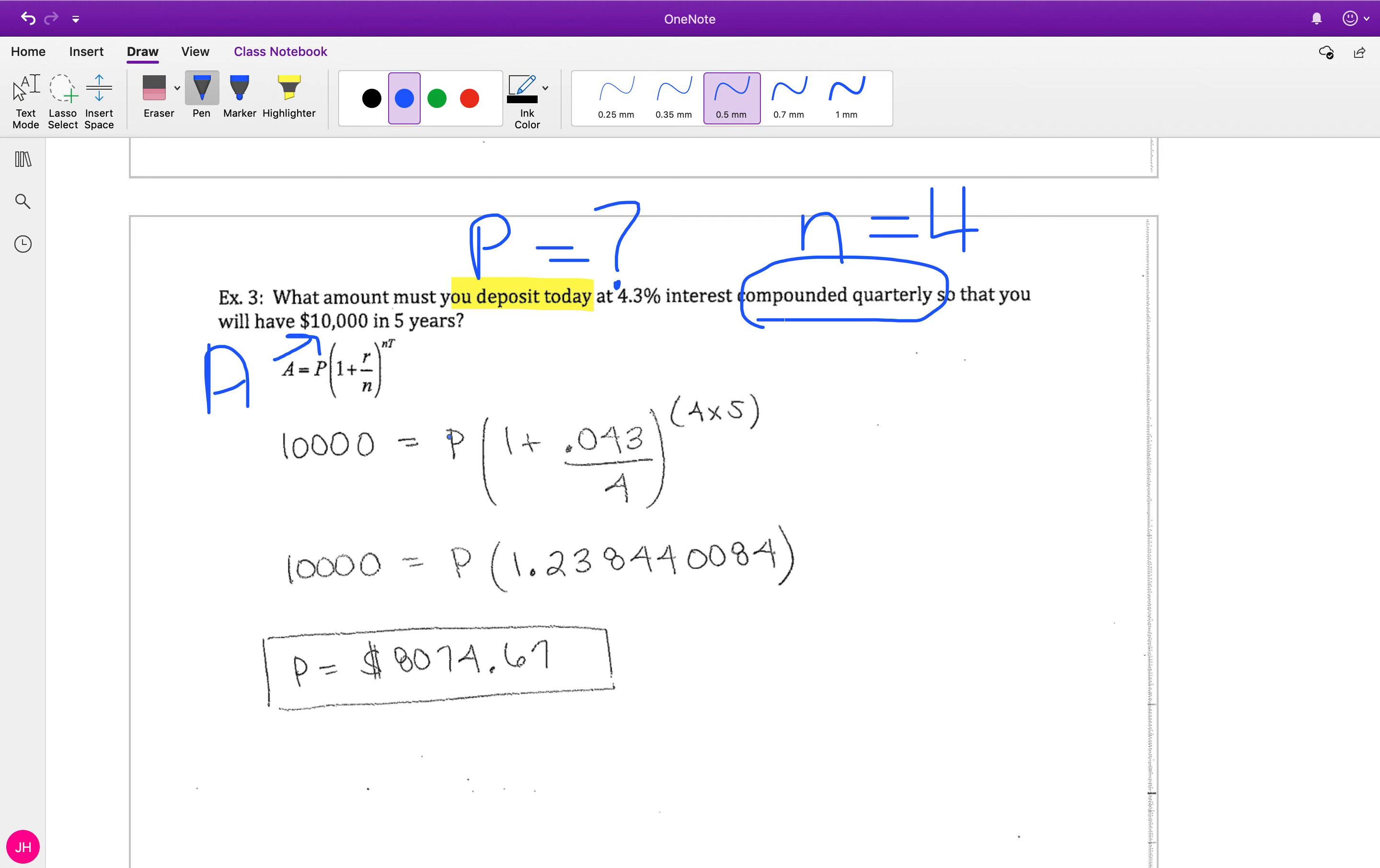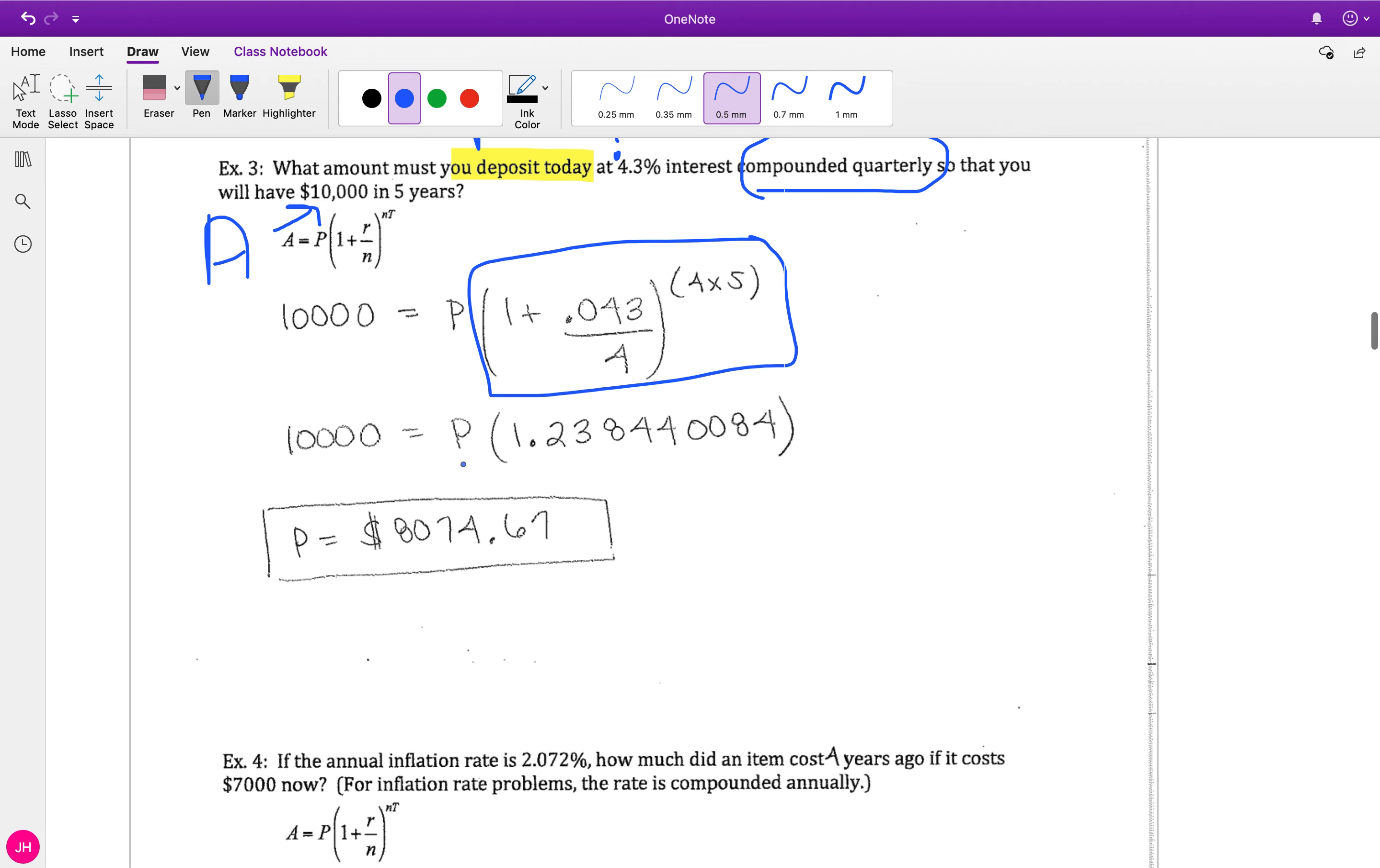Now when I plug in, I'm gonna plug in 10,000 for A. I'm gonna leave the letter P and plug in my R, my n, and my T. Now I'm looking for P, so I'm gonna type in all this other stuff - parentheses and all - in my calculator. It's gonna give me a crazy decimal. Do not round. We cannot round till the end. I'm gonna keep my crazy decimal, and now I need to solve for P.